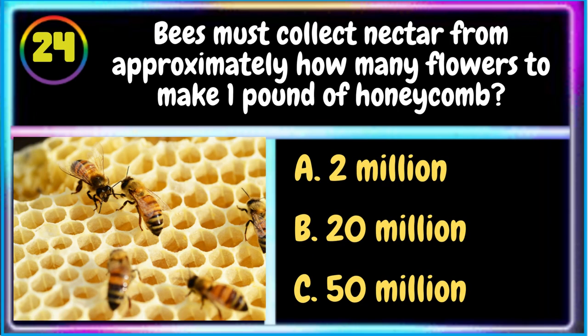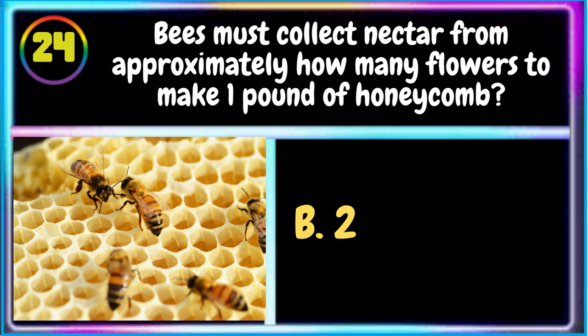24. Bees must collect nectar from approximately how many flowers to make one pound of honeycomb? A. 2 million B. 20 million C. 50 million. The correct answer is B. 20 million.